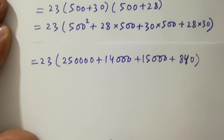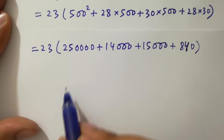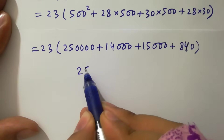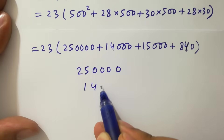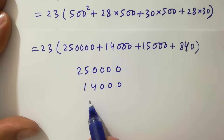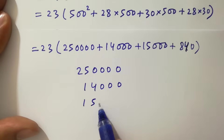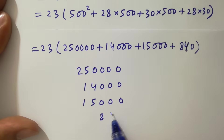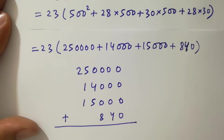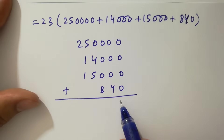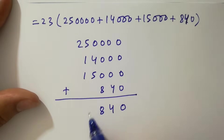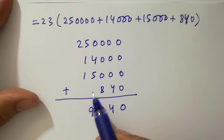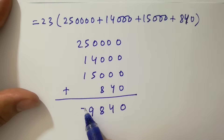In the next step, adding them all together: 250,000 plus 14,000 plus 15,000 plus 840. Adding gives us 0, 4, 8, then 9, then 7, then 2 — so 530 times 528 equals 279,840.